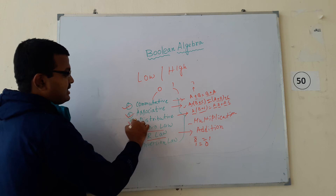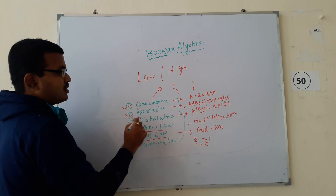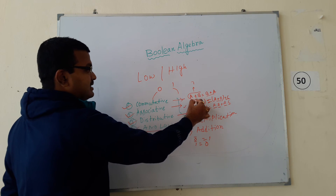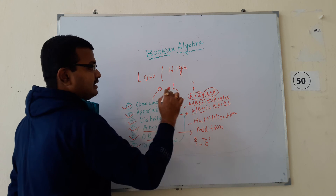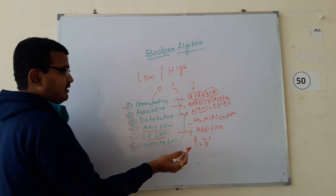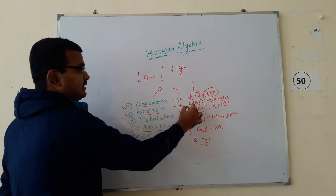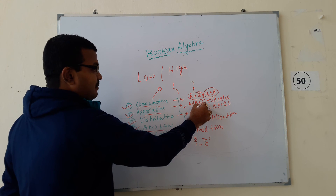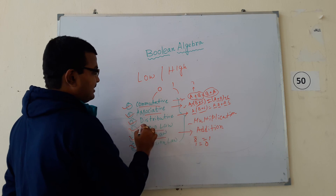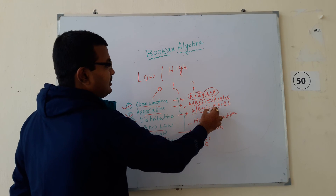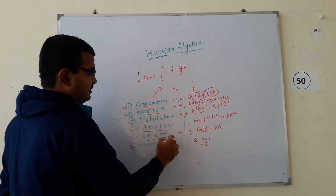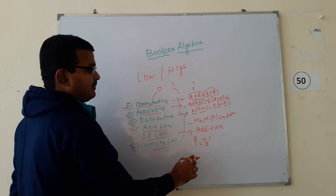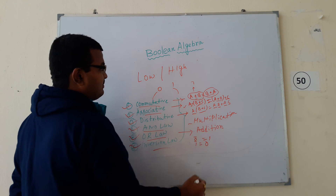These laws are associated with Boolean algebra. First, commutative: A plus B equal to B plus A — the result will not differ. Associative means A plus (B plus C) equal to (A plus B) plus C — these results are equal. Distributive: A dot (B plus C) equal to A dot B plus A dot C. AND means multiplication, OR means addition, and inversion means complement — 0 complement means 1, and 1 complement means 0.